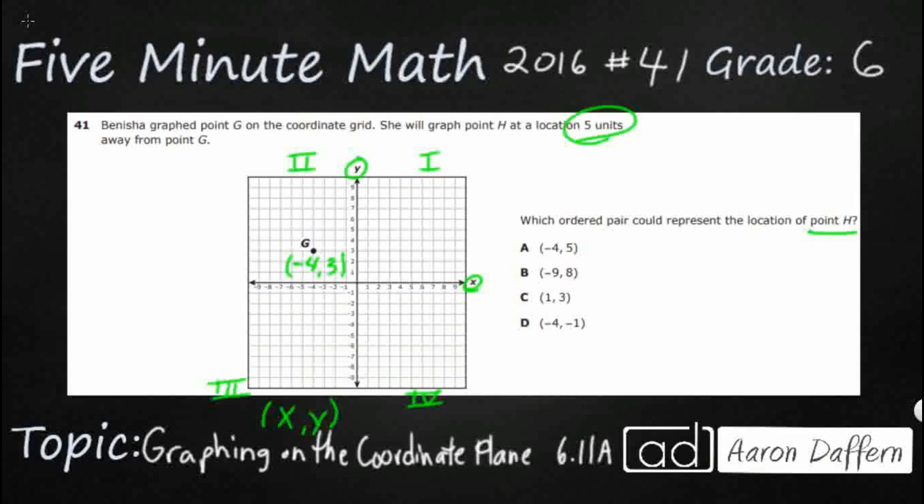So 5 units away, well let's just count 5 units in each direction. Let's graph all those and see which ones pop up. So from G, I'm going to go 1, 2, 3, 4, 5 up right here. Notice our X is going to stay the same, because we didn't move left or right at all. What we did is we moved up and down.